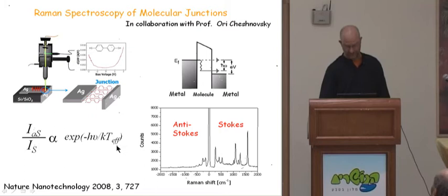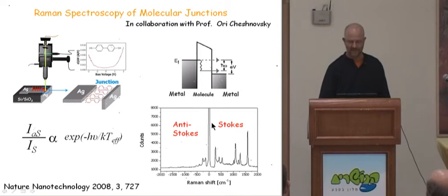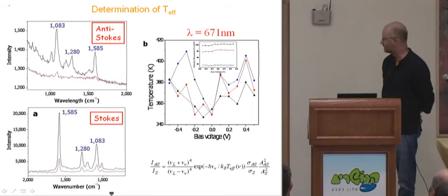By theory, we can relate the ratio of anti-Stokes intensity to Stokes intensity and extract the effective temperature. Raman spectroscopy allows us to see many modes inside the junction. As a result, we can see what the effective temperature is for different vibrational modes as we pass current through the molecule. This was published recently, and I want to jump almost to the bottom line.